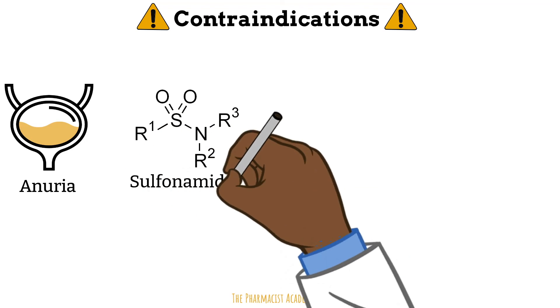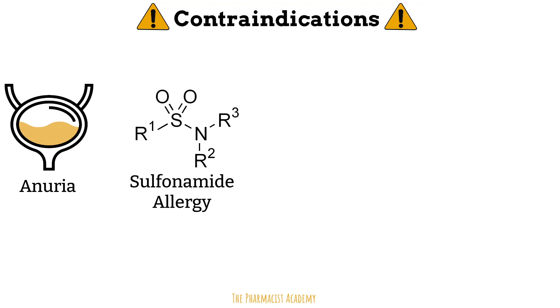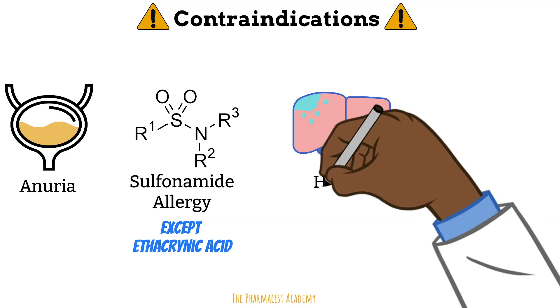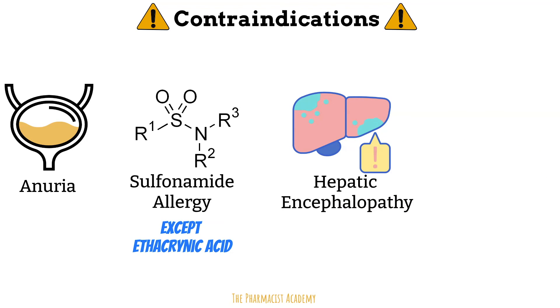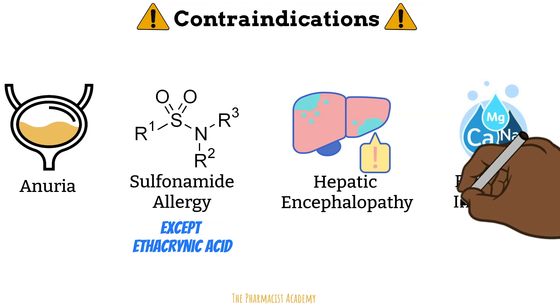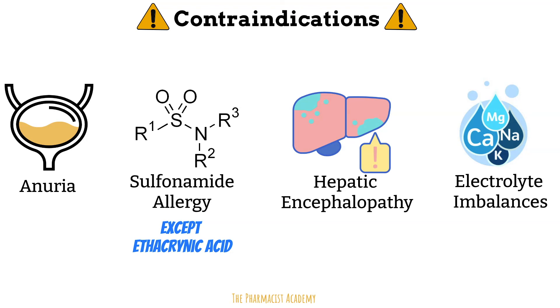Because loop diuretics have a sulfonamide backbone chemical structure, they are not recommended in patients with a history of hypersensitivity to sulfur or sulfonamide drugs. Loop diuretics are also not recommended in patients with hepatic encephalopathy, since they could further increase the production of ammonia and precipitate hypokalemia also seen in these patients. Lastly, always correct any electrolyte imbalances before starting loop diuretics.